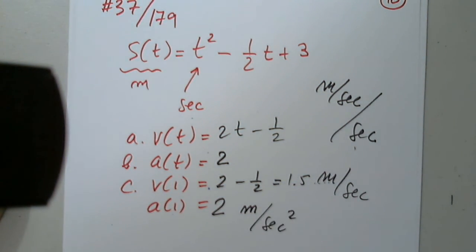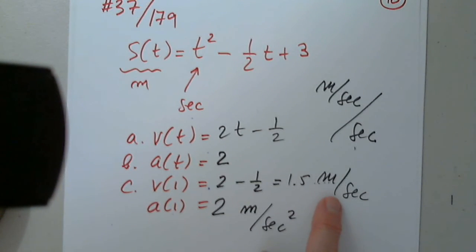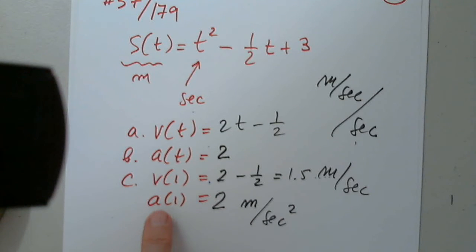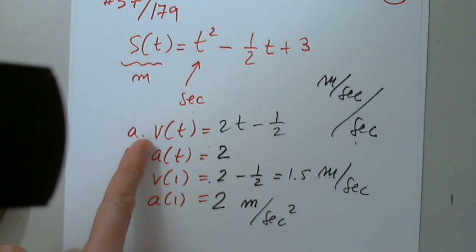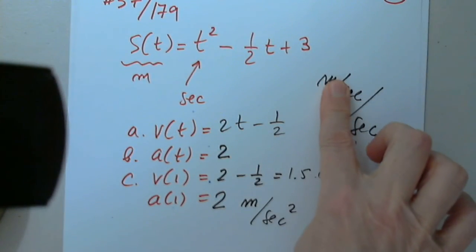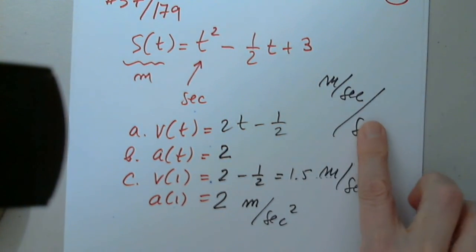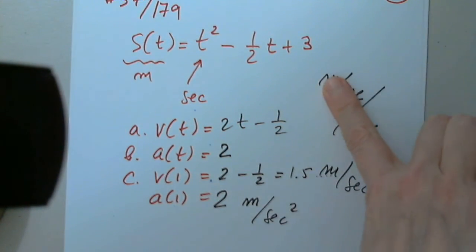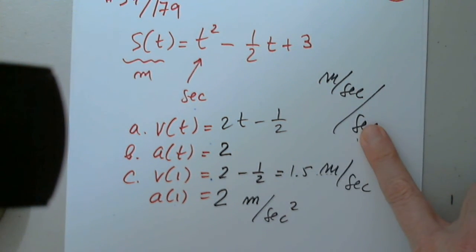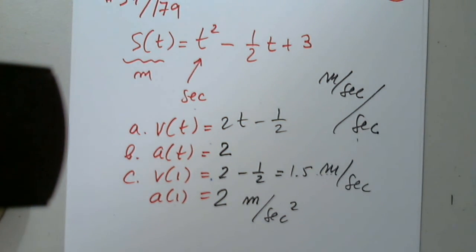Meters per second squared — yes, because you flip the denominator. Please remember: the measurement unit for velocity in this case is meters per second, but acceleration is the rate of change of velocity with respect to time — velocity on top, time on the bottom — so the unit is meters per second squared.